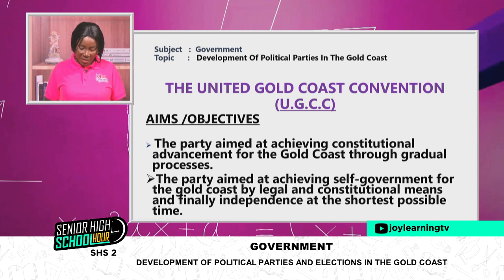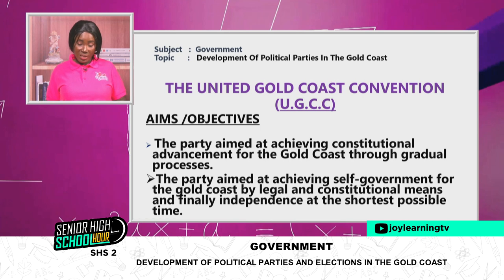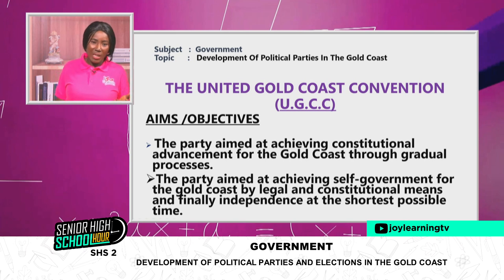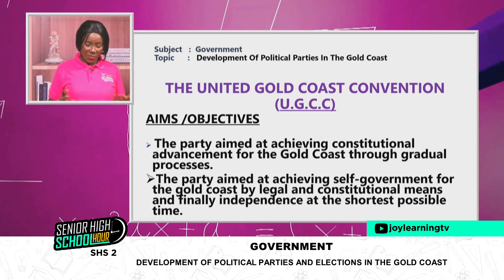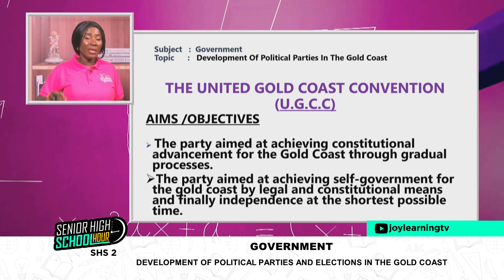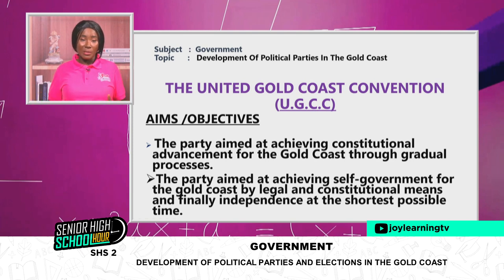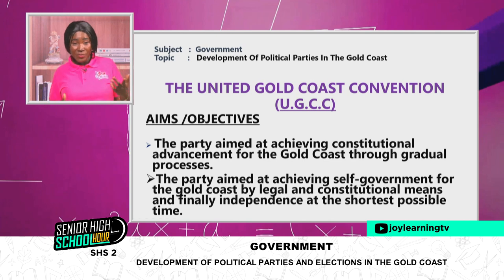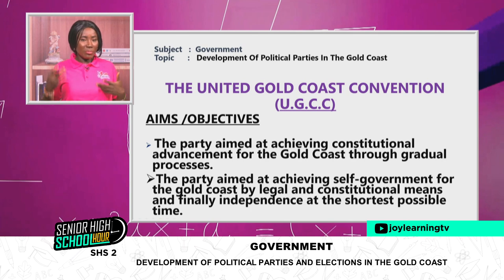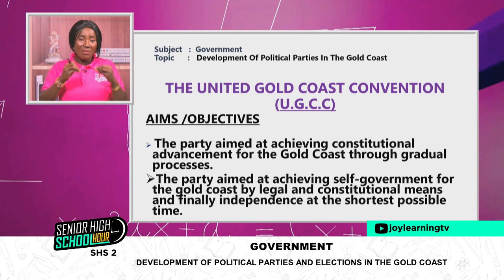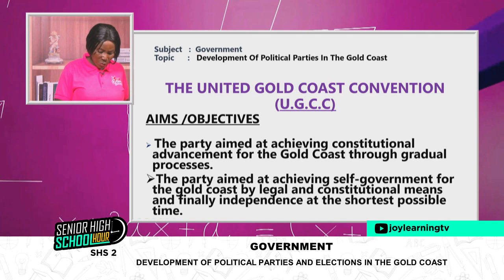The party aimed at achieving self-government for the Gold Coast by legal and constitutional means, and finally independence at the shortest possible time. When they said shortest possible time, it could be today, tomorrow, or ten years from now. The people were suffering at the hands of the British, and their agitation was to gain freedom from colonialism — and that is what the UGCC could offer the people.